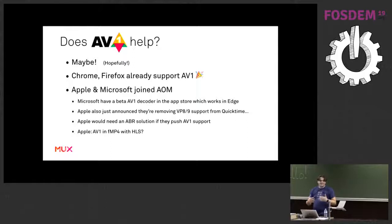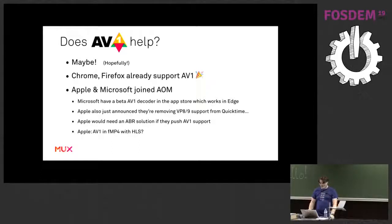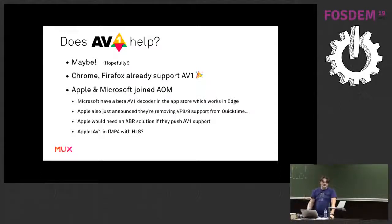But Apple have not made any announcement of their intention in joining AOM - they've just joined it. Also last week they announced they're going to remove VP8 and VP9 support from QuickTime, which doesn't seem to indicate an aligned direction. My bet - a complete gamble - is that if Apple do invest in AV1, what we'd see is AV1 in fragmented MP4 served from an HLS manifest. Apple are not aiming for a Libre system; they're big investors in H.264 and H.265. The container to them is fine to not be open. Hopefully I'm wrong.